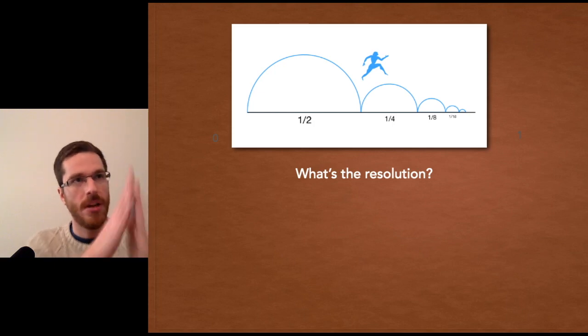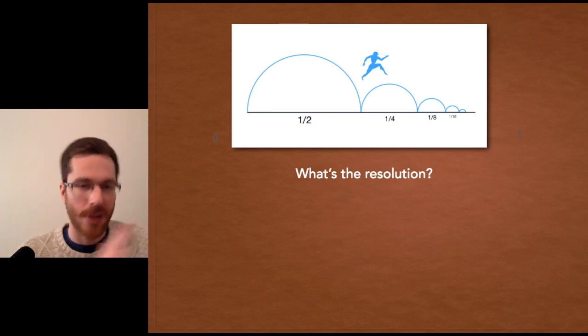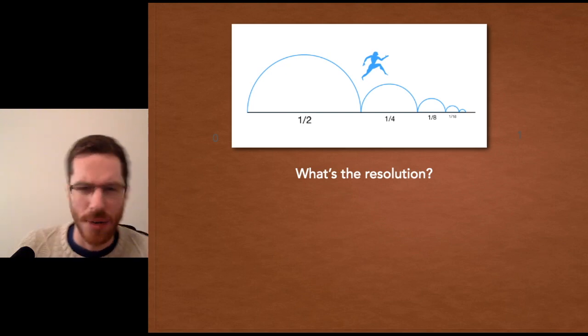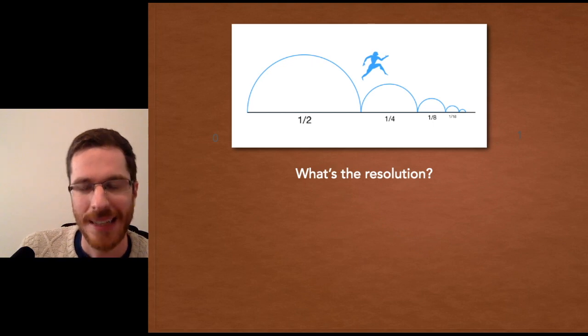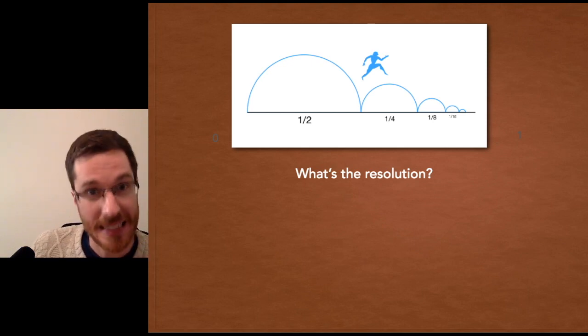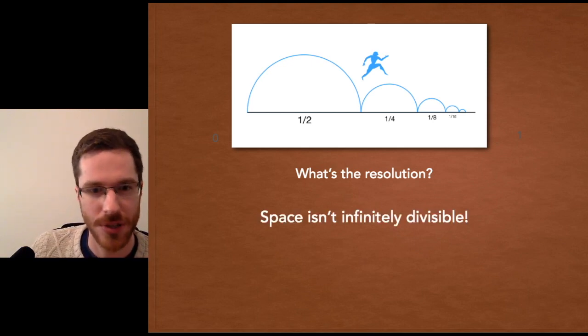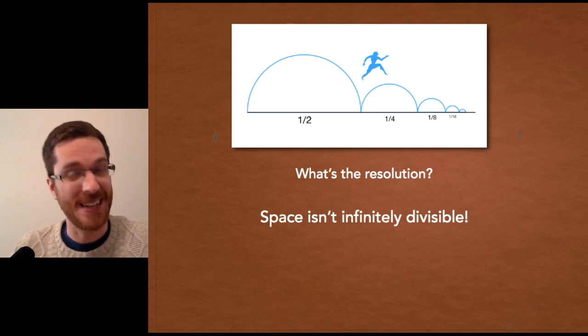Yes, of course, these values converge, but they never actually reach equality. Well, what does that mean? Do we conclude with Zeno that motion is impossible? No, we don't. There's actually a really simple, concrete, logical resolution to Zeno's paradoxes. Space is not infinitely divisible.